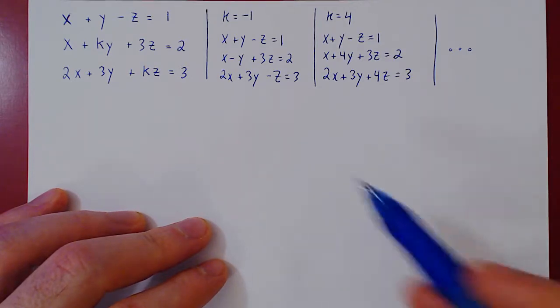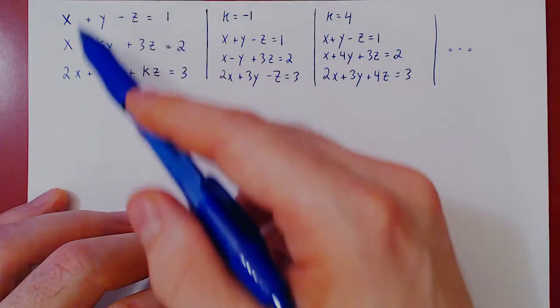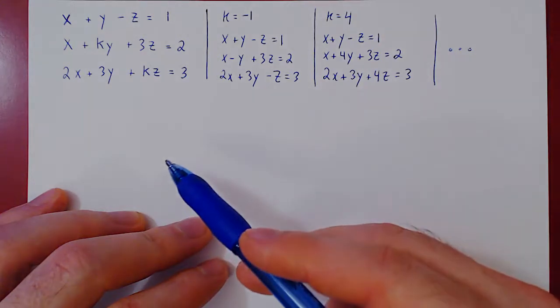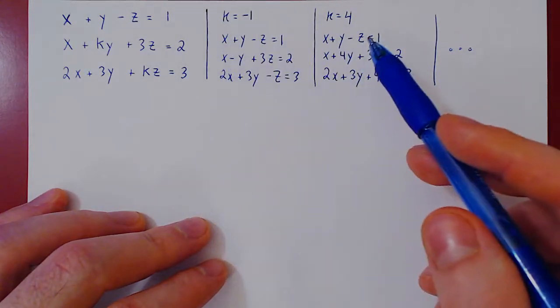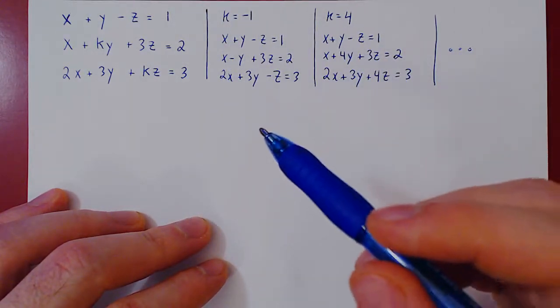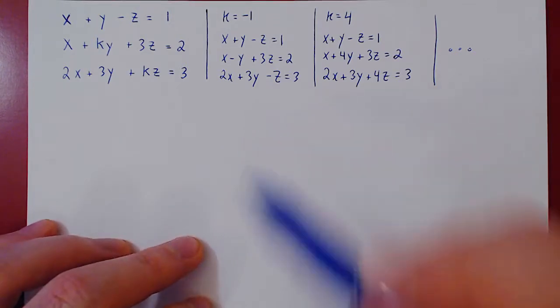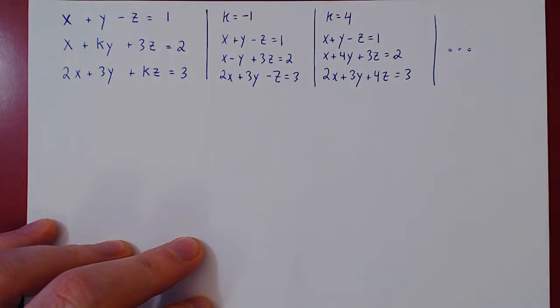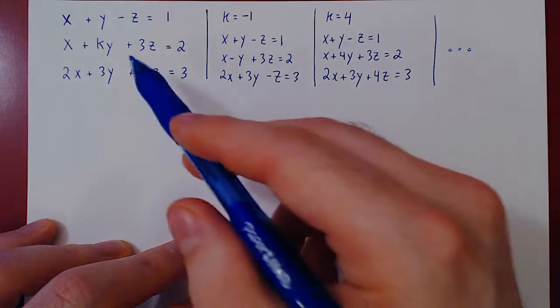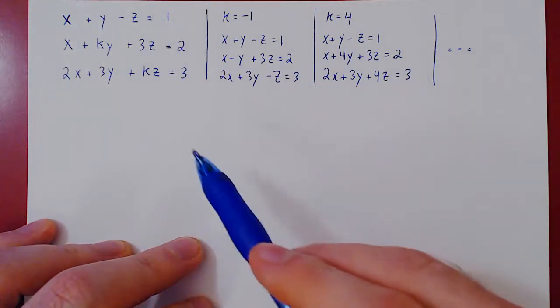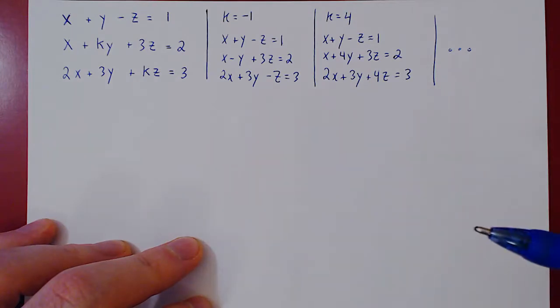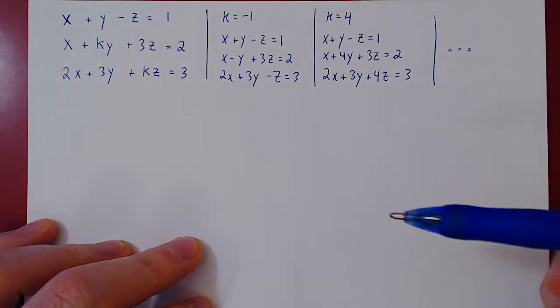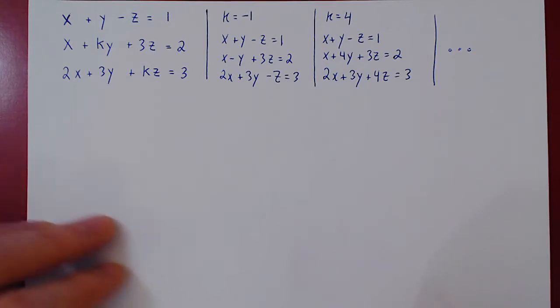Now there is a natural question to ask. How could we perhaps classify these linear systems according to values of k? Well, we know that a linear system always either has no solution, a unique solution, or an infinite number of solutions. So we could classify the linear systems in our family according to the values of k when we have no solution, a unique solution, or an infinite number of solutions.